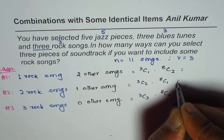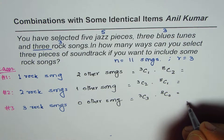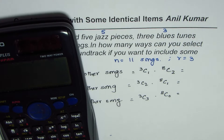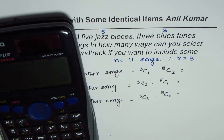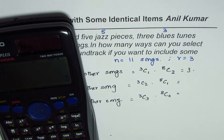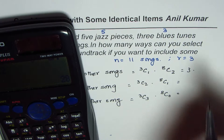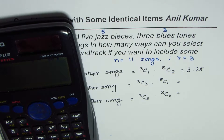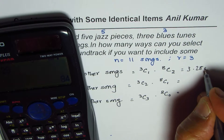Now we can use the calculator to find these values and then add them up. 3C1 equals 3, and 8C2 equals 28, so three times 28 equals 84.